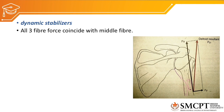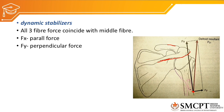All three fibers of the deltoid combine to create an abduction movement of the glenohumeral joint. But deltoid alone is not able to create abduction. Why? Because the deltoid attachment — from the acromion process, spine of the scapula, and lateral clavicle — gets inserted to the deltoid tuberosity. Because of this attachment, when the muscle contracts it creates an upward translatory force, called Fx.